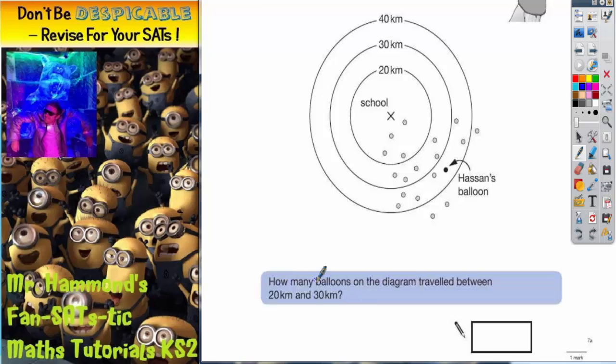It says, how many balloons on the diagram travelled between, keyword, 20 kilometres and 30 kilometres. So 20 kilometres is this circle here. And 30 kilometres, if we follow it round, is this circle here. Now we're interested in how many balloons have travelled between those circles, between 20 and between 30. So we just need to count the balloons now.